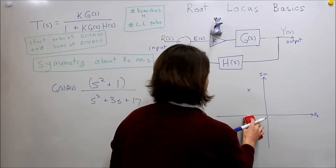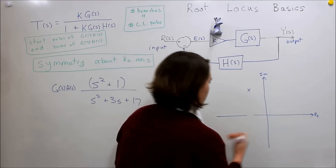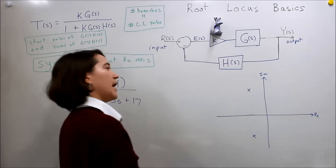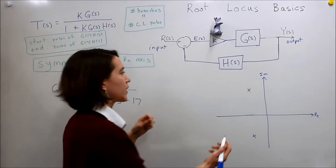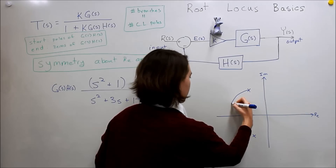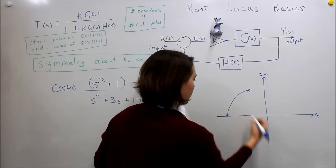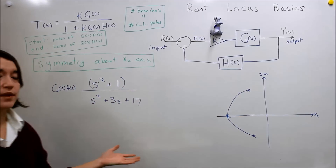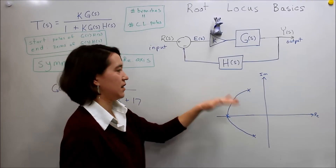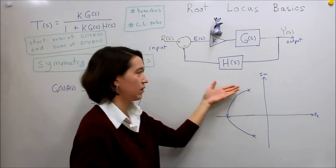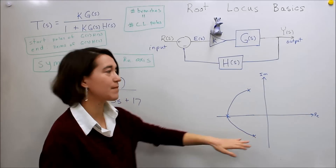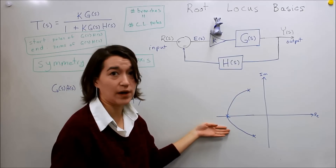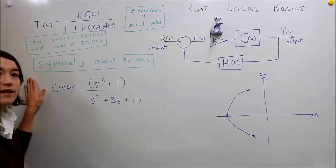For example, say you were starting from a point and the poles were going to move with K. If this one starts to move towards the real axis, the other one would have to follow it exactly. So you can always remember there's symmetry across the real axis — if you solve for one on the top half, you know the bottom half as well. So that's one aspect: you have to have symmetry.